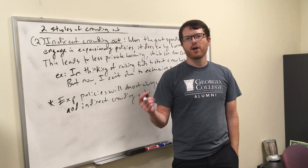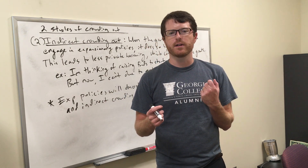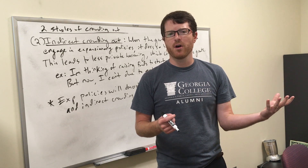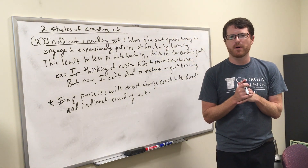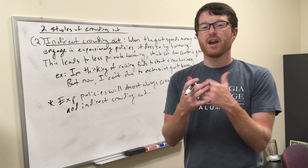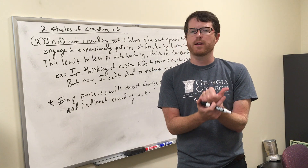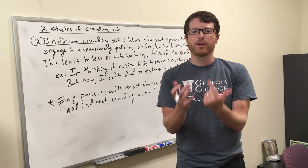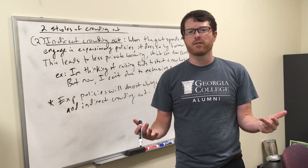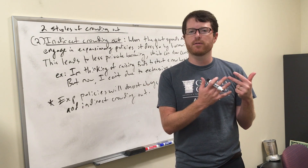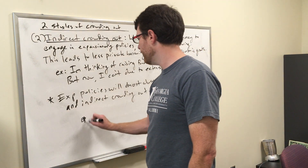Now let's talk about indirect crowding out. The first thing to recognize is where does the government get the money it spends? From taxes and from borrowing. If it's engaging in expansionary fiscal policy, it's spending borrowed money. For example, if the government raises spending from $3 trillion to $4 trillion, there's a $1 trillion gap it must borrow. Or if it cuts taxes so revenues drop to $2 trillion, it still has to borrow that difference.